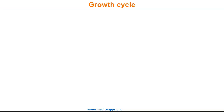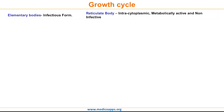Now let's move forward and look at the growth cycle of Chlamydia. Before we see the growth cycle, let's understand that it has two developmental stages: the elementary body and the reticulate body. The elementary body is the infectious form of Chlamydia. They possess a rigid outer membrane that binds to receptors on host cells and initiates infection.